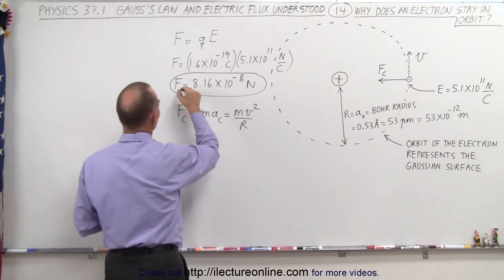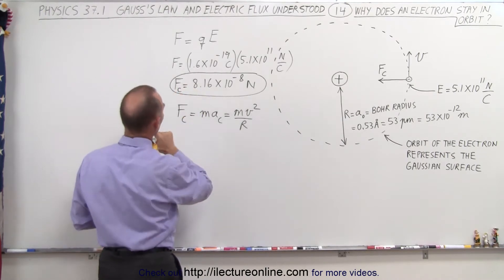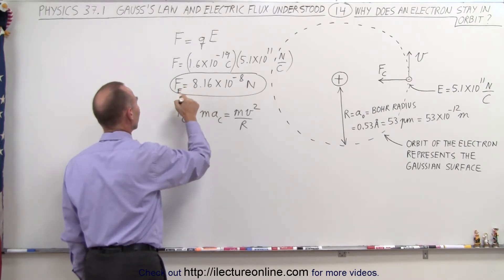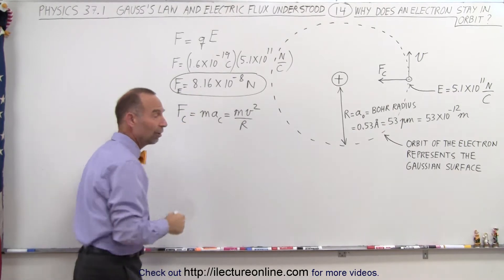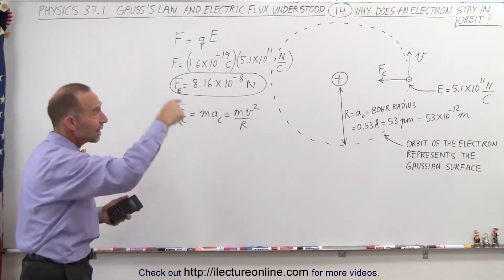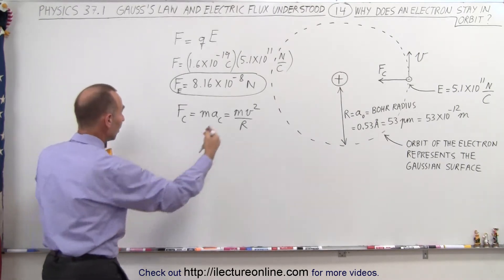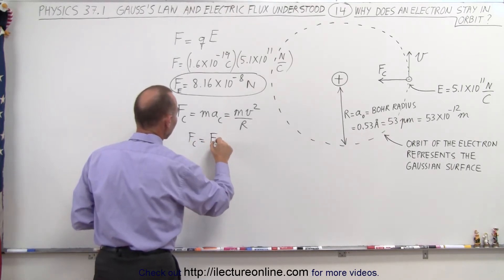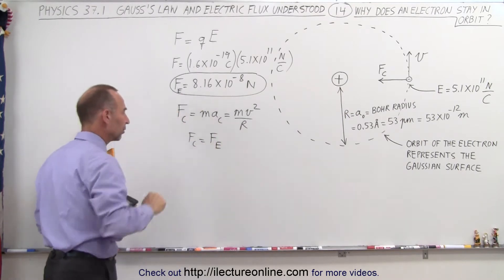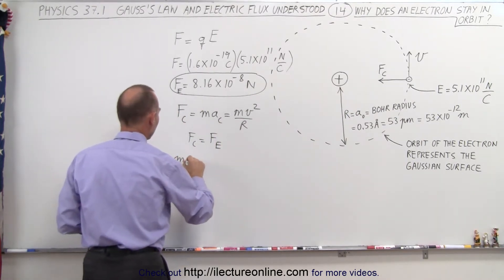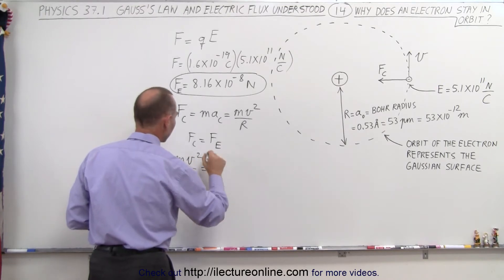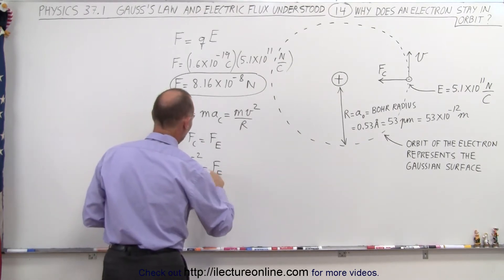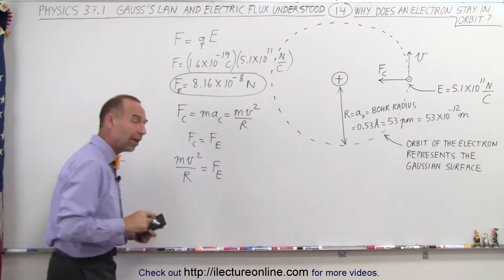If we call the Coulomb force the force caused by the electric field — F sub e — that is the centripetal force necessary to keep the electron in orbit. Since we know the electron stays in orbit, we can set those two equal to each other: the centripetal force is provided by the electric force. So mv squared over r must equal F sub e, and we can use this equation to solve for the velocity of the electron.